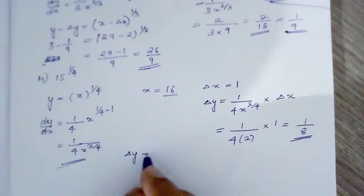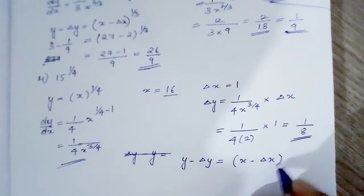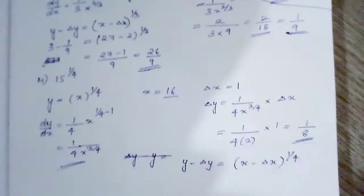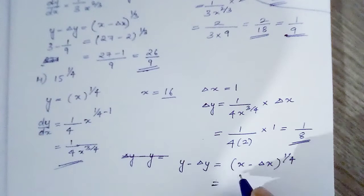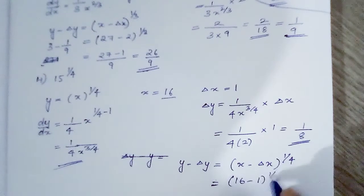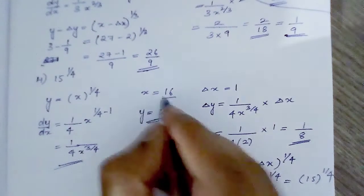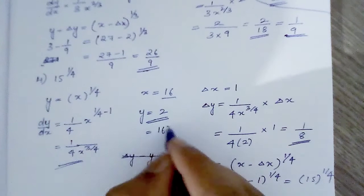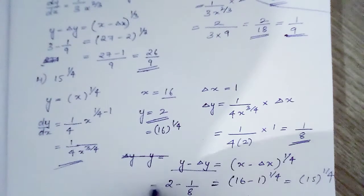y minus delta y is equal to x minus delta x raised to 1 by 4, which is 16 minus 1 raised to 1 by 4, equal to 15 raised to 1 by 4. Since y equals 2 because 16 raised to 1 by 4 is 2, we write 2 minus 1 by 8 equals 15 raised to 1 by 4. This equals 16 minus 1 by 8, which is 15 by 8.